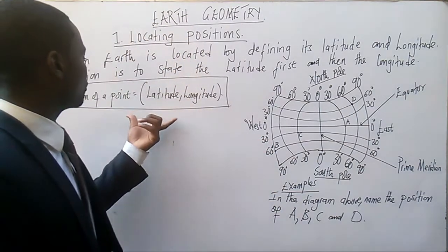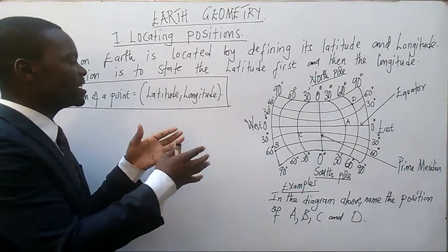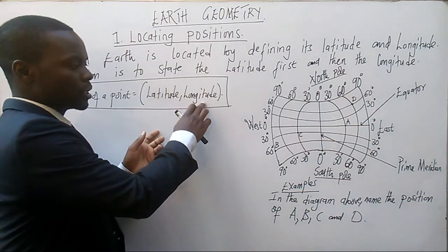This is the formula which I have indicated here. Location of a point is actually defined by stating the latitude, comma, the longitude. Very simple.